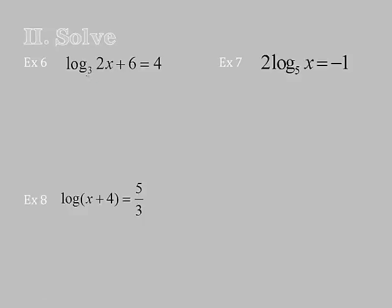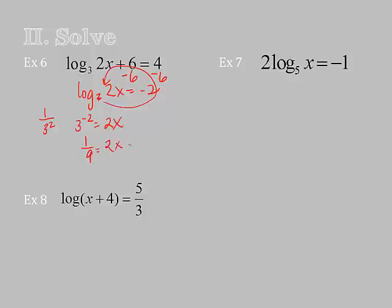Let's try this one. I have a single log to solve, but I have a plus 6. I need to get the logarithm by itself. So I'm going to subtract 6. I get the log base 3 of 2x equals negative 2. Now I'm going to swirl. So I have 3 to the negative 2 power equals 2x. 3 to the negative 2 power is 1 over 3 squared, which is 1 ninth, equals 2x. Get rid of the 2 by multiplying by its reciprocal. That gives me 1 over 18.